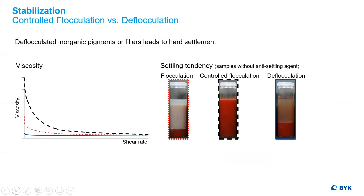Comparing apples to apples, we see that the same pigments in the same system using a controlled flocculation additive provides less settling. Complete deflocculation has a negative side effect of hard pack settling, since each particle now is independent in the system.